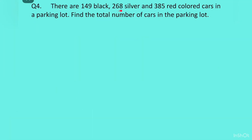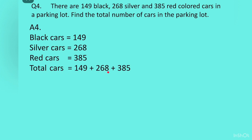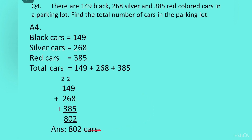Question 4. There are 149 black, 268 silver and 385 red colored cars in a parking lot. Find the total number of cars in the parking lot. We write: black cars is equal to 149, silver cars is equal to 268, red cars is equal to 385. Total cars is equal to 149 plus 268 plus 385. Writing these three numbers one below the other and adding gives 802. Answer: 802 cars.